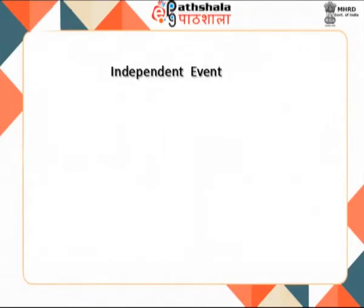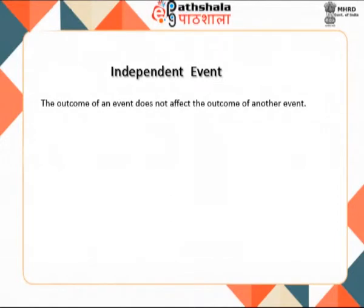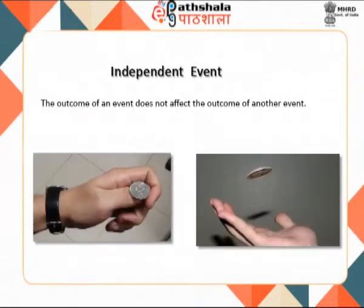Another type of event is the independent event. These are events in which the outcome of one event does not affect the outcome of another event. For example, if a coin is tossed two times, the result of the second toss is completely unaffected by the result of the first toss, meaning the two tosses are independent.